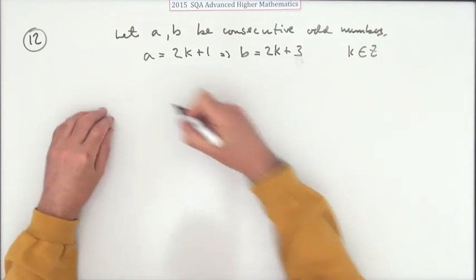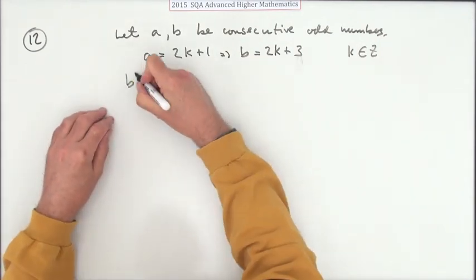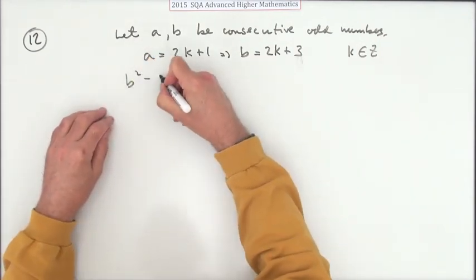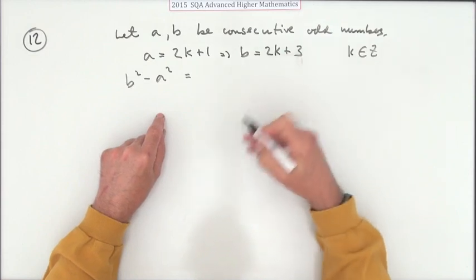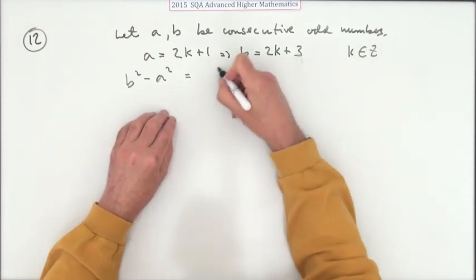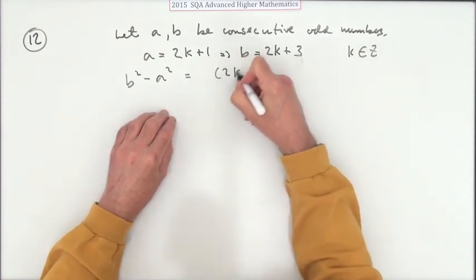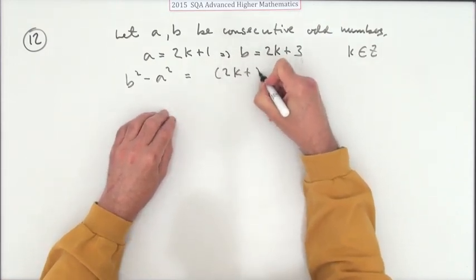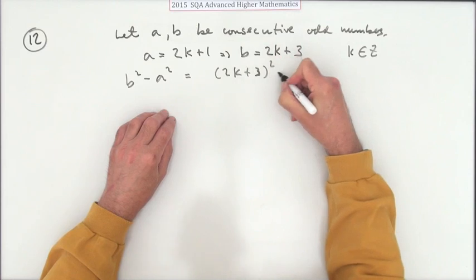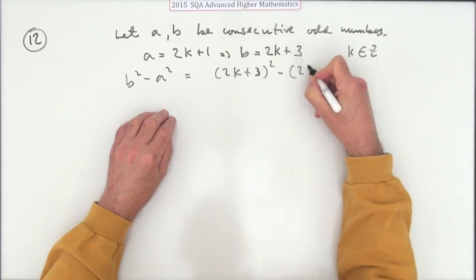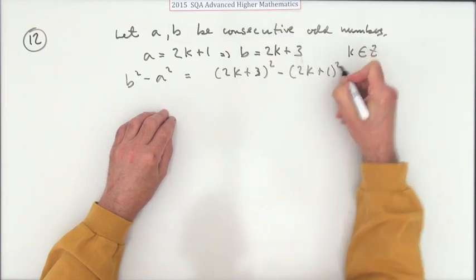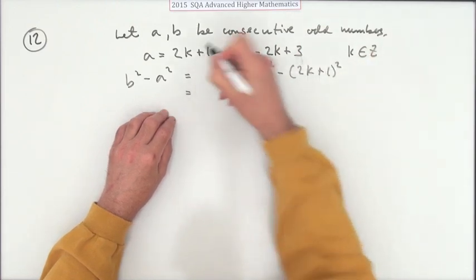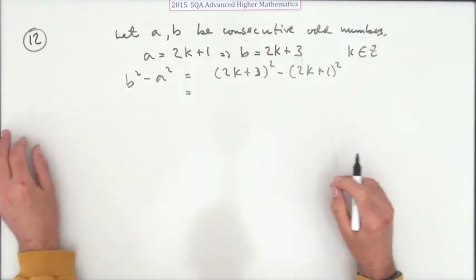Then just do what it says. What is B squared minus A squared? That's the difference in the squares, and B is the larger one. That'll be (2K + 3)² minus (2K + 1)².